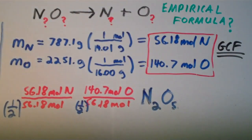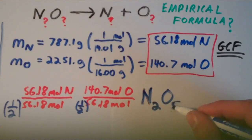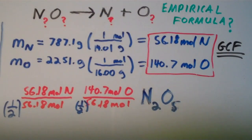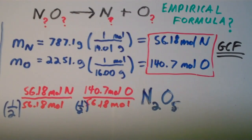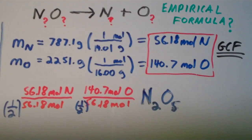N₂O₅ is the empirical formula of this compound, but it's not necessarily the molecular formula. The empirical formula gives only the relative numbers of atoms of each element, not the absolute number in the compound. To find the molecular formula, you would need the molar mass of the compound — and we will do that in another video.